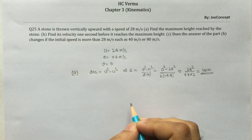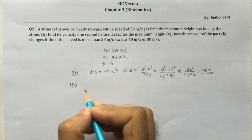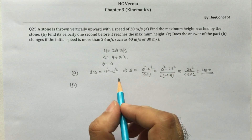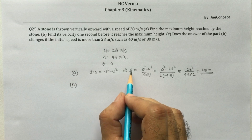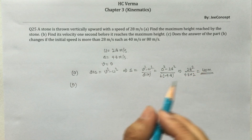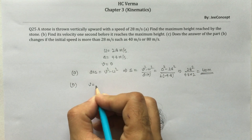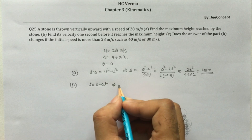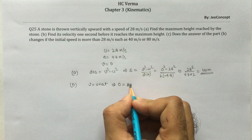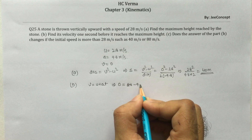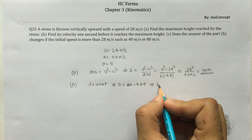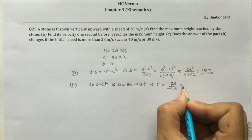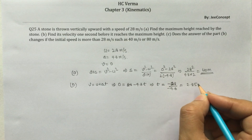For part B, we need the velocity one second before the stone reaches maximum height. First, we calculate the time taken to reach maximum height using v = u + at. Final velocity is 0, initial velocity is 28, acceleration is minus 9.8. So t = minus 28 / minus 9.8, which gives 2.85 seconds.